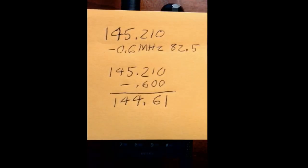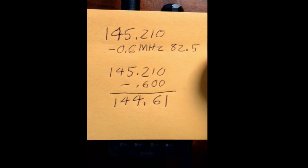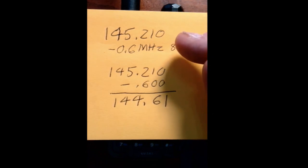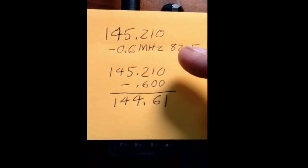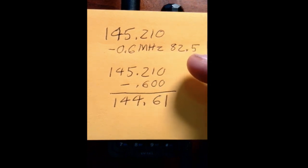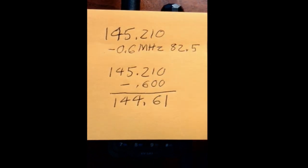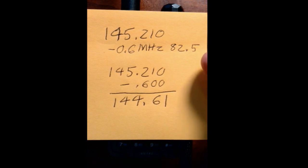Repeaters are generally identified by the frequency that they transmit on. They're on a much higher tower within range of this radio. Then they'll display what's called the offset, and that is how far from this frequency you need to go to come up with the transmit frequency for the radio. That is the frequency that the repeater — 145.210 — will be listening on, and if it hears anything on that, it will rebroadcast if it also hears a tone of 82.5. This is called a subaudible tone.